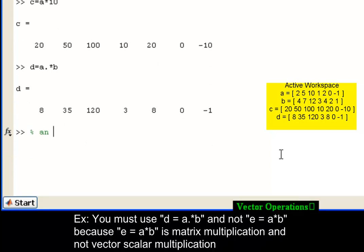You must use D equals A dot times B and not E equals A times B, because E equals A times B is matrix multiplication and not vector scalar multiplication.